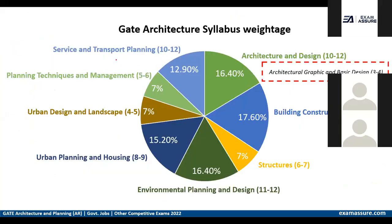This is the cumulative syllabus of GATE architecture weightages from the last 10 years. Architecture and design questions account for 10 to 12 marks, building construction is around 4 to 8-9 marks, and structures, environmental planning, and other topics make up the remainder.